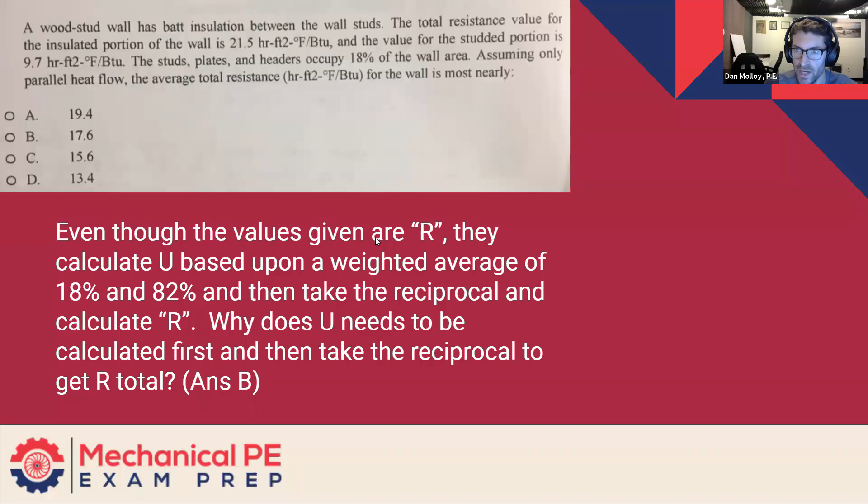Even though the values given are R, they calculate U based on a weighted average of 18% and 82%, and then take the reciprocal and calculate R. Why does U need to be calculated first and then take the reciprocal to get R total? And the answer is B.